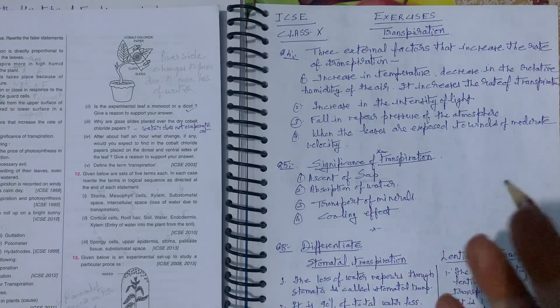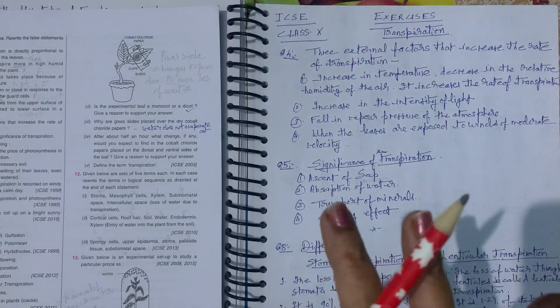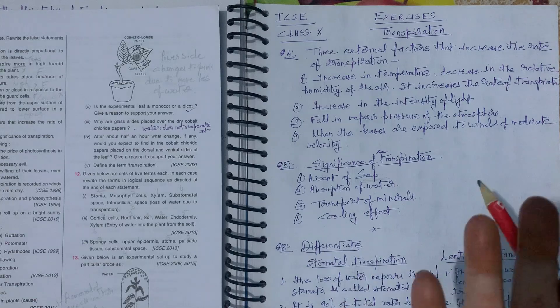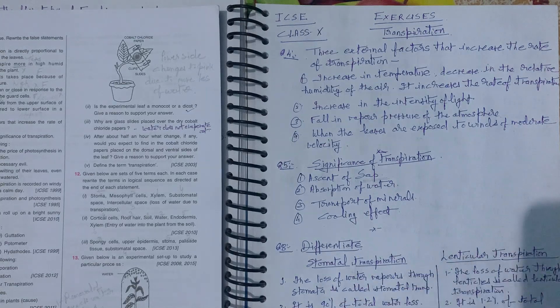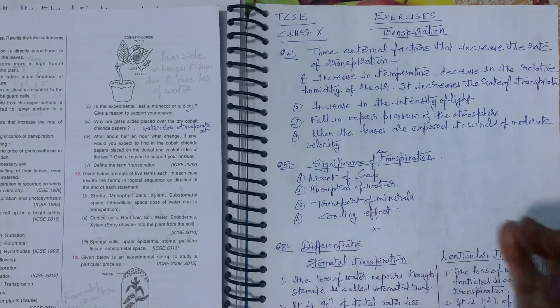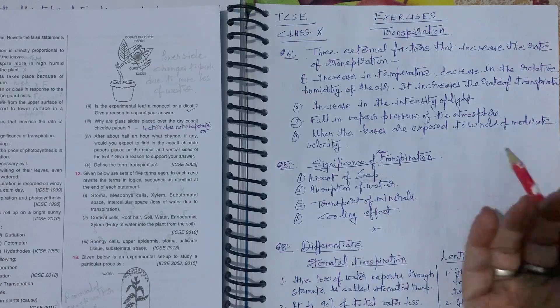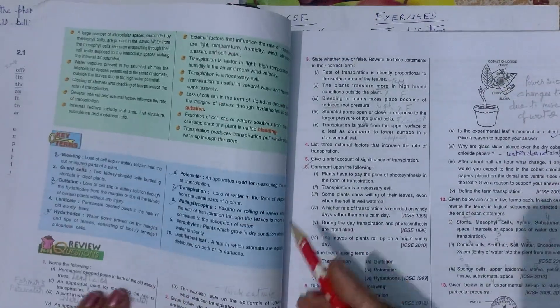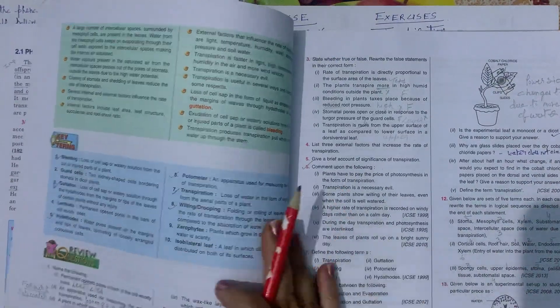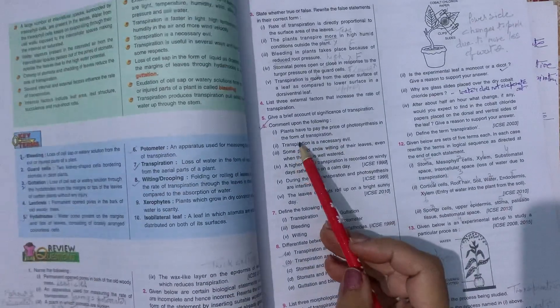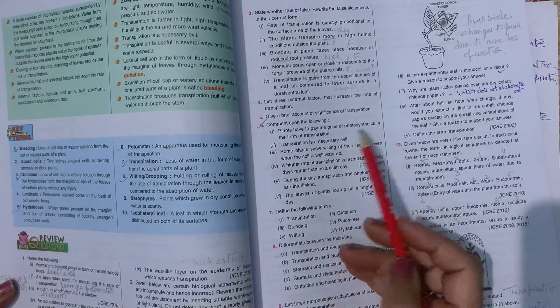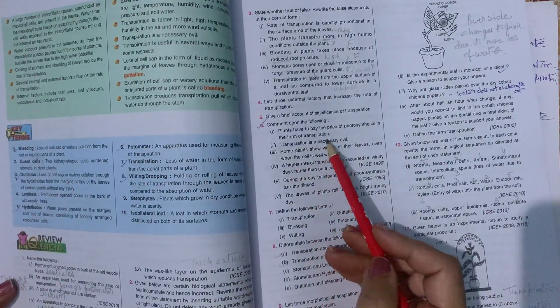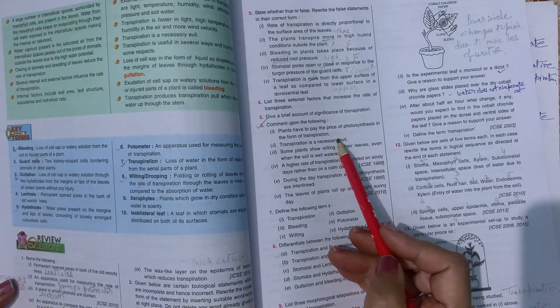As much as water evaporates, the plant remains cool — evaporation provides a cooling effect, maintaining normal temperature. Comment on: 'Plants have to pay the price of photosynthesis in the form of transpiration.'